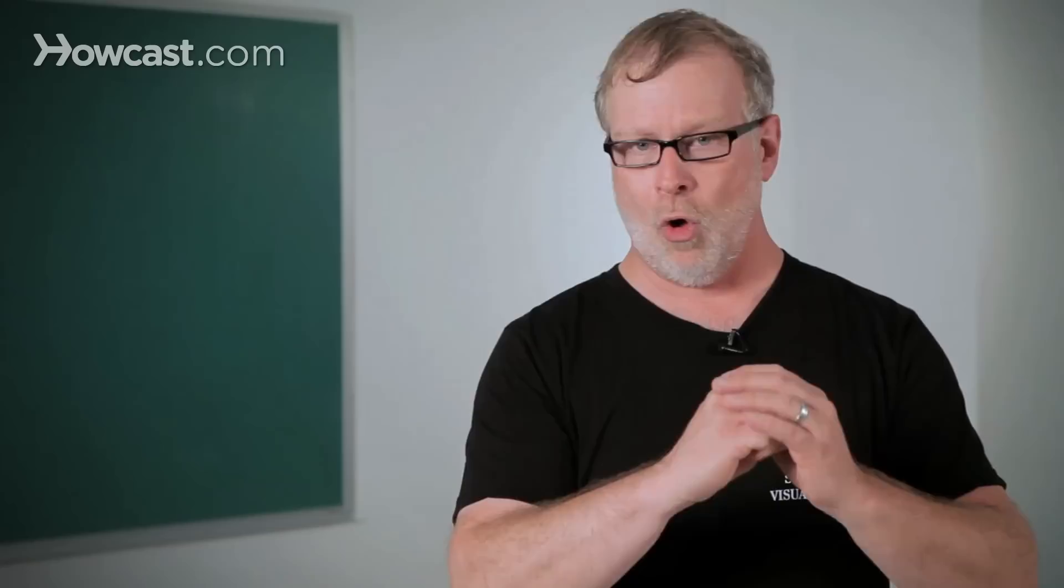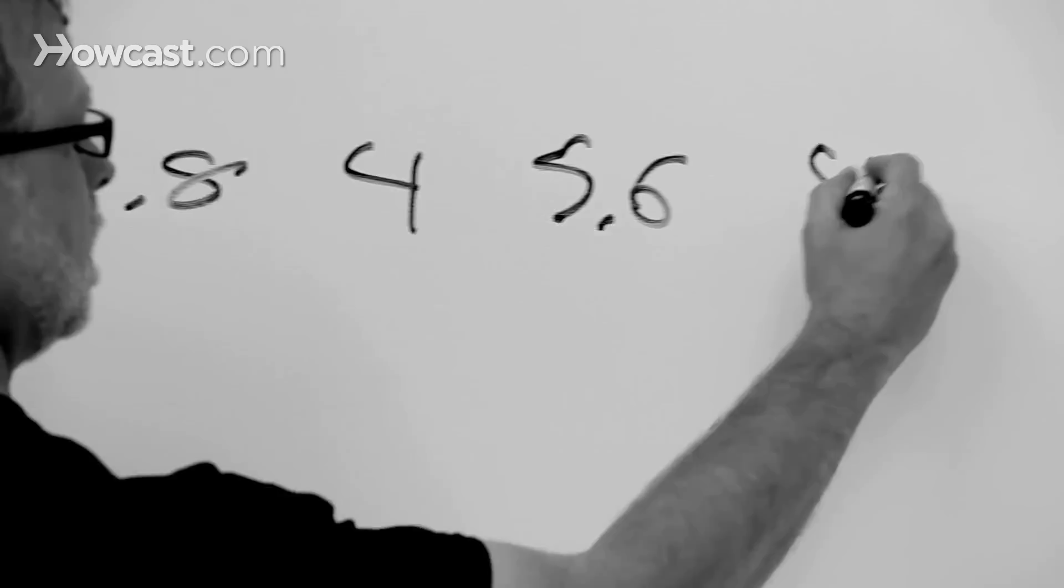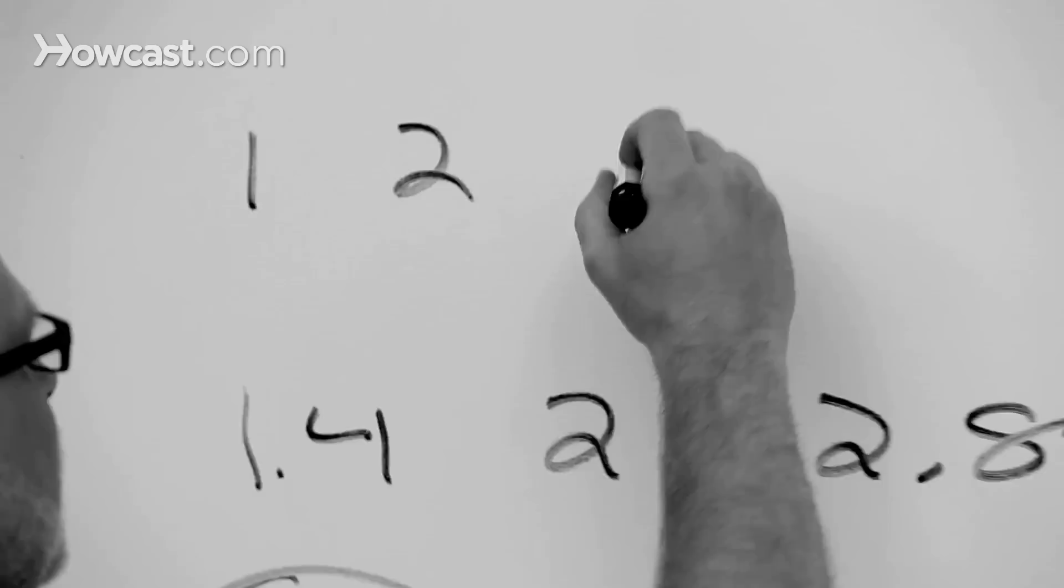The smaller the hole, the less light it lets in, but the more depth of field you get. Depth of field is the amount of distance in front of and behind your point of focus that's just as sharp as your point of focus. The smaller your aperture or the higher your f-stop number, the greater your depth of field is going to be. The lower the number, the bigger the hole, the less your depth of field is going to be.